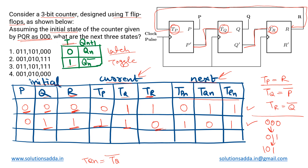We now have two states after triple zero: 011 and 101. One more remains. With current state 101: TP = R = 1, TQ = P complement = 0, TR = Q complement = 1. For the next state: T=1 so toggle mode, TP is 1 so TP(n) = 0. Q is zero so latch mode, TQ(n) = 0. R is 1 so toggle mode, TR is 1 so TR(n) = 0. The next state is triple zero.